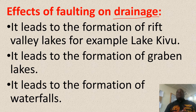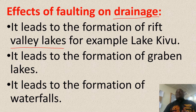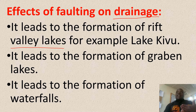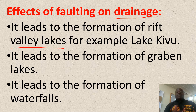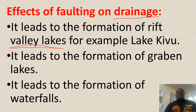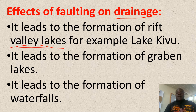Number one, faulting leads to the formation of rift valley lakes. Remember we saw rift valleys under the effects of faulting on relief. So when these rift valleys are filled with water, they form rift valley lakes. For example, Lake Chibu, Lake Tanganyika, Lake Malawi, etc.